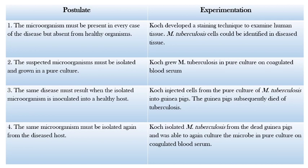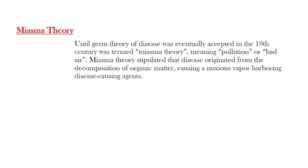Robert Koch developed techniques to examine tuberculosis cells from diseased tissue, postulating that the microorganism must be present in every case of disease and absent in healthy individuals. He then prepared a blood serum coagulated culture to isolate Mycobacterium tuberculosis in pure form. Koch then injected pure cultured Mycobacterium tuberculosis into a healthy guinea pig, which subsequently died of tuberculosis, proving that the organism was the causative agent. He then isolated the bacteria for identification purposes.